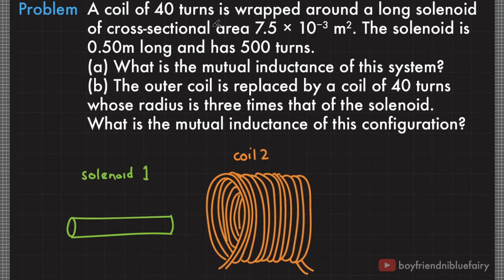Let's try to solve some problems involving mutual inductance. This problem is from OpenStax University Physics Volume 2, Chapter 14 Inductance, Problem 31. A coil of 40 turns is wrapped around a long solenoid of cross-sectional area 7.5 × 10⁻³ m². The solenoid is 0.5 meters long and has 500 turns. What is the mutual inductance of this system?